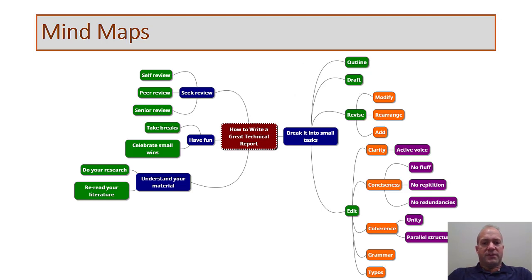Mind maps — we don't see these too often in technical reports, but when included they can be very helpful. They break information down into smaller pieces without necessarily being chronological; it's really any logical breakdown that will help your reader understand what you're trying to convey. I've shown a mind map of how to write a great technical report, broken down by category. Going on the right: break it into small tasks — the high-level tasks are outline, draft, revise, and edit.